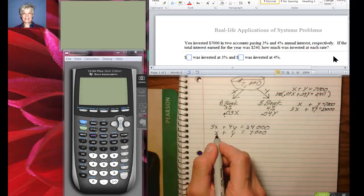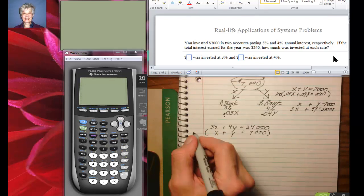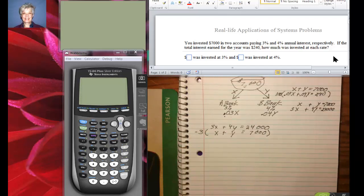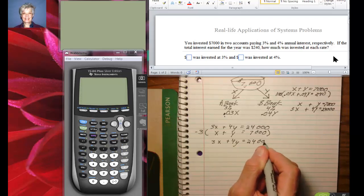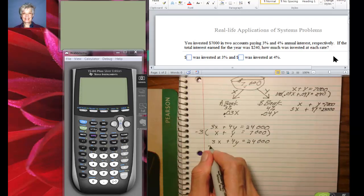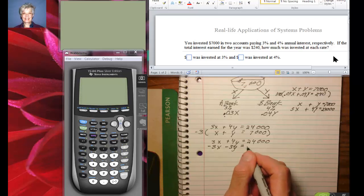So I'll have 3X plus 4Y equals 24,000, and negative 3X minus 3Y will equal negative 21,000.